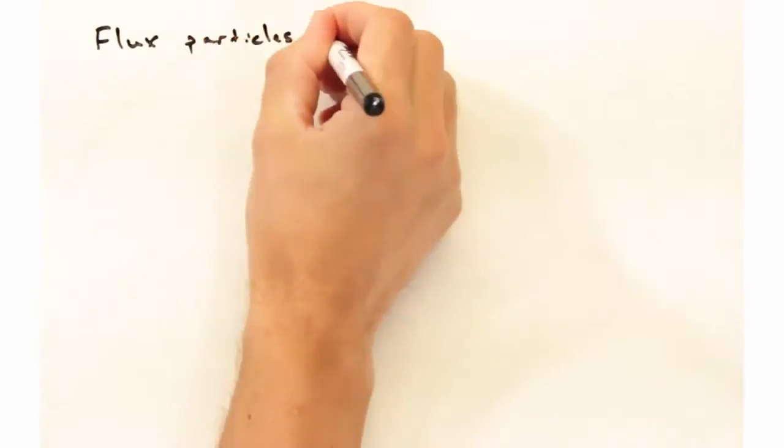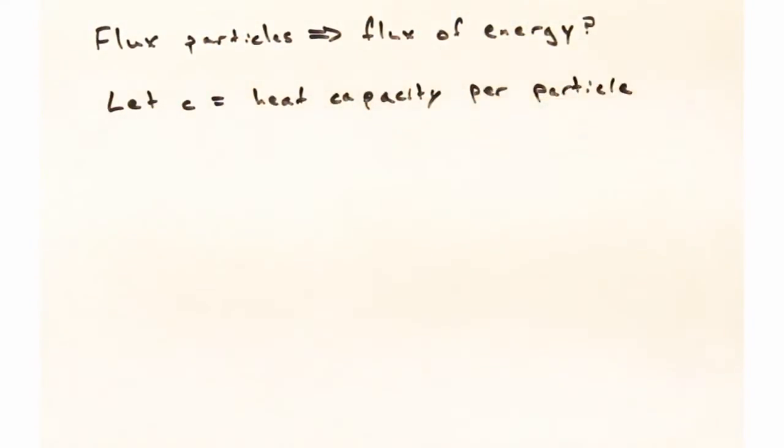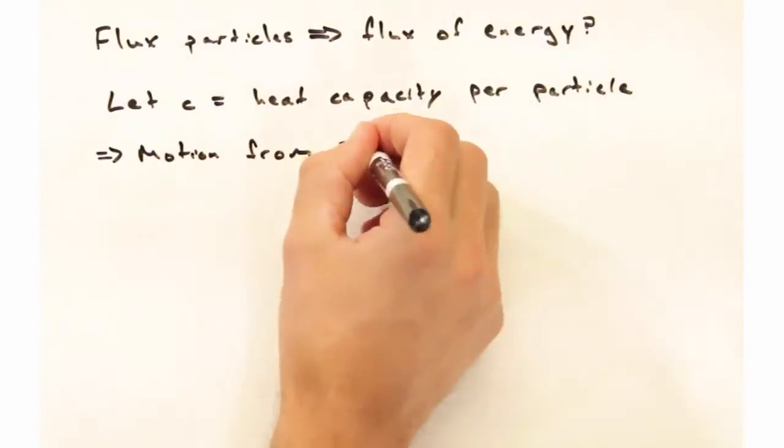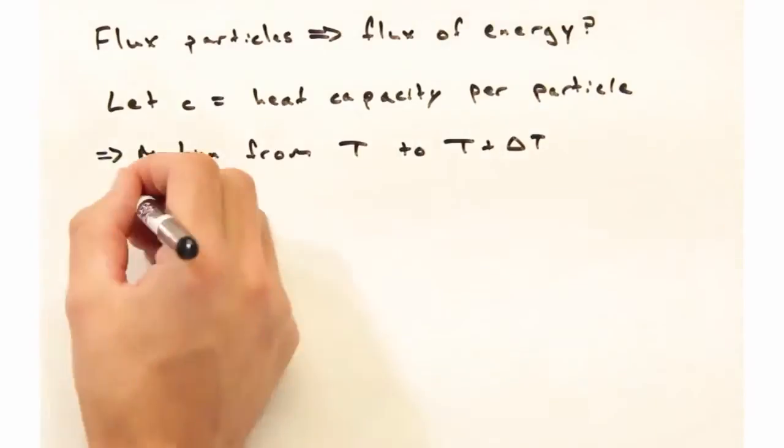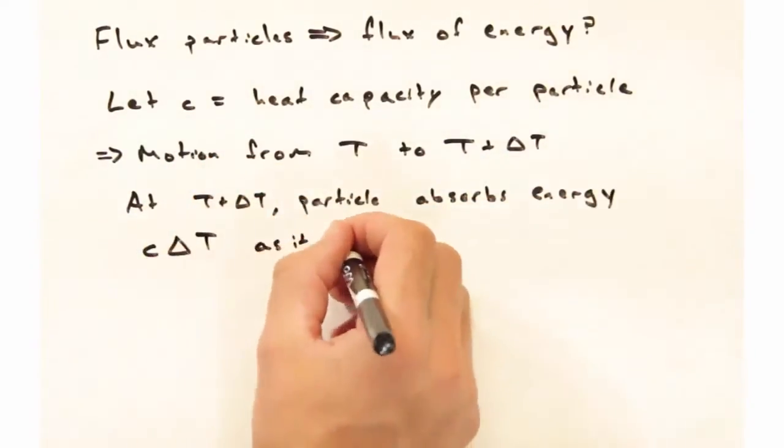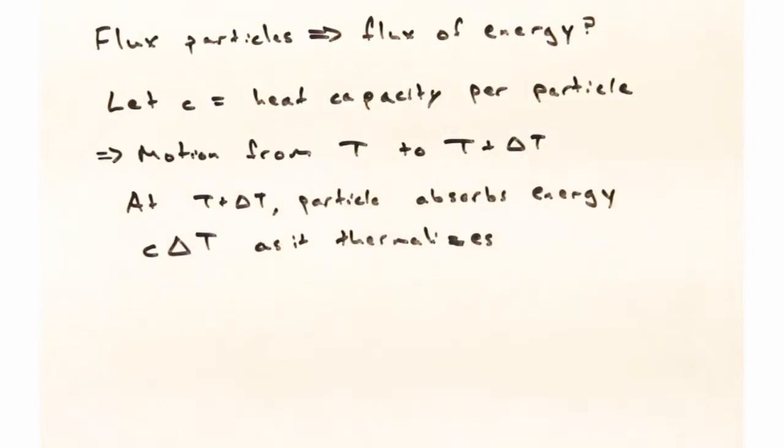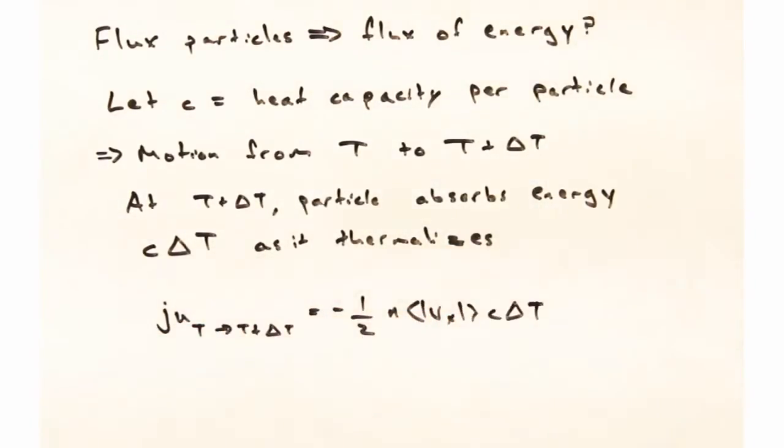Particle flux is all well and good, but we really want to think about the flux of energy. So, let's let lowercase c be our heat capacity per particle. In that case, if I have a single particle moving from t to t plus delta t, once the particle is at t plus delta t, you might expect it to absorb energy from the system as it thermalizes. And the amount of energy you might expect it to absorb would be its heat capacity, c, times delta t. So, that makes it actually pretty easy for us to go from a flux of particles to a flux of energy. All we have to do is multiply by the c delta t term.